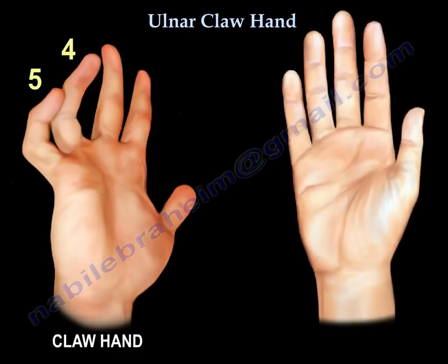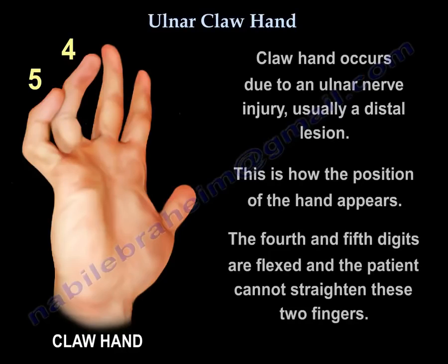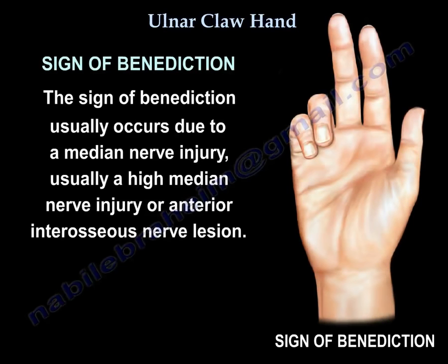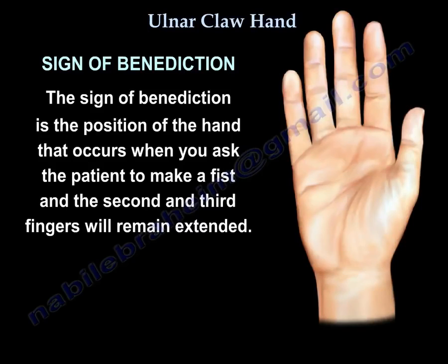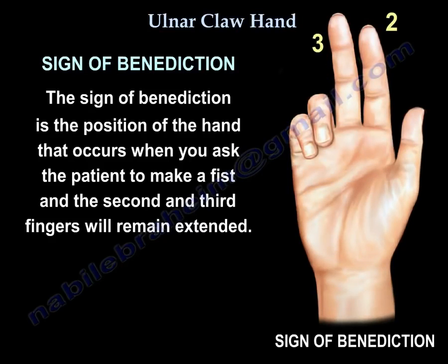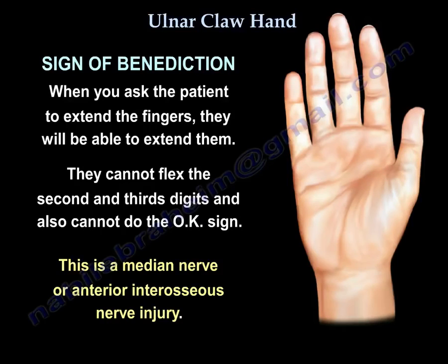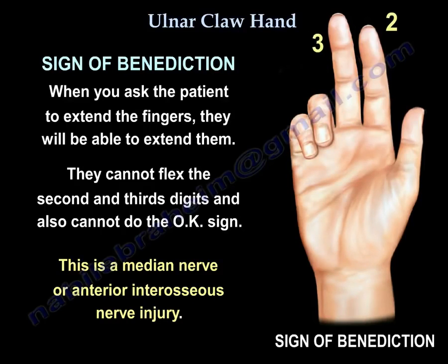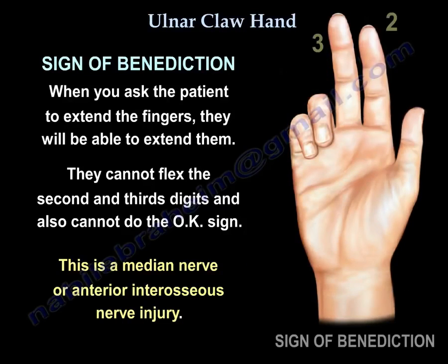Claw hand and the sign of benediction may appear similar; however, they are not the same. The claw hand comes from an ulnar nerve injury, usually a distal lesion. The sign of benediction usually comes from a median nerve injury — typically a high median nerve — or from an anterior interosseous nerve lesion. The sign of benediction is the position of the hand when you ask the patient to make a fist: fingers two and three will remain extended. When you ask the patient to extend the fingers they can, but they cannot flex digits two and three and cannot do the okay sign. When you flex the fingers, two and three will remain extended.